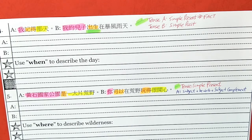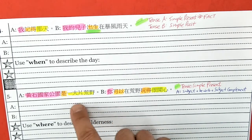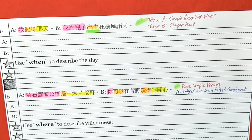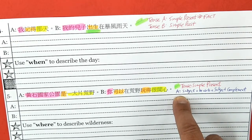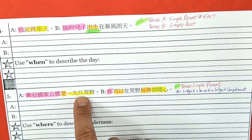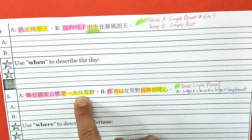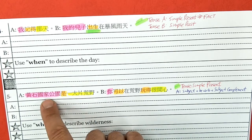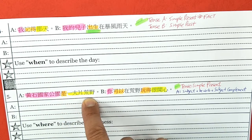Look at number five. Use your colors to color — find the verb, find the subject, find the object. This tense is again simple present because it's telling us a fact. What's important about sentence A? There is a be verb here. This is really not an object — I used yellow to color it, but it's not an object. This is called a subject complement. So we have subject, be verb, subject complement.